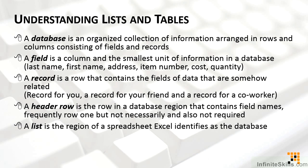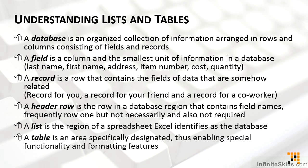A list is the region of a spreadsheet that Excel identifies as a database. Neither a list nor a database by themselves are a table. A table is something specific — an area specifically designated — and that's what enables all the special functionality and formatting features we've heard so much about.